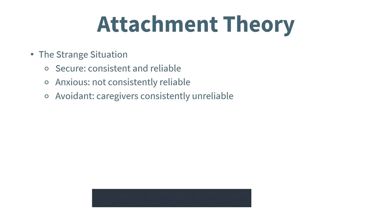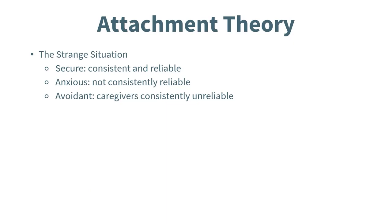As seen in the video, the Strange Situation reveals different attachment styles from a very young age. In secure interactions, caregivers respond quickly and reliably to distress cries. In anxious attachment — also called anxious-ambivalent — caregivers were not consistently reliable and were sometimes intrusive or rejecting. In avoidant attachment, caregivers were fairly consistently unreliable and unresponsive to the infant's needs. This study illustrates how we can form different attachment styles so early in life.